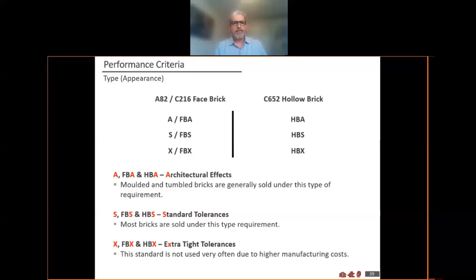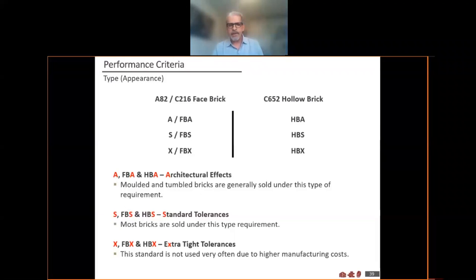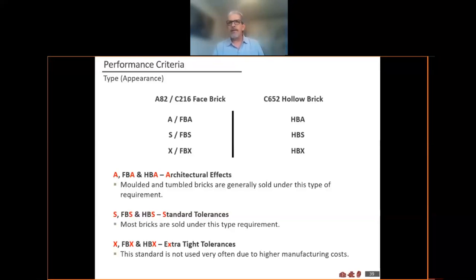Revisiting the different specifications: type A, type S, and type X. Canada does not yet have a standard pertaining directly to thin brick, but that will be coming. Thin brick is becoming more and more popular. Under ASTM, the same way as you have FB for facing brick and HB for hollow brick, they also have classifications TBA, TBS, and TBX — meaning all the same things as far as appearance and tolerances, just applied to thin brick instead of face brick.